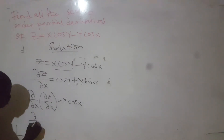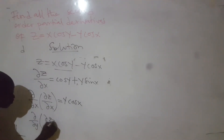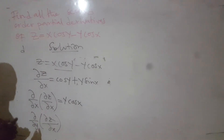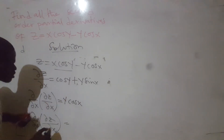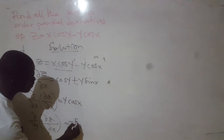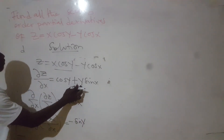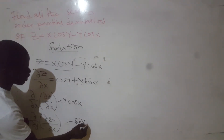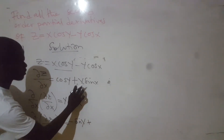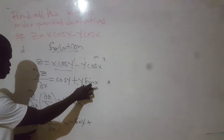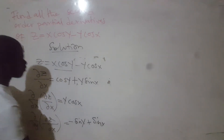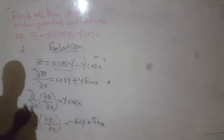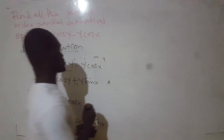Now let's go and differentiate z with respect to y. We are differentiating the previous result with respect to y. When we differentiate cos y, we get negative sin y. When we differentiate the y here, we get 1. So, plus — when we differentiate y sin x with respect to y, we get sin x. So these are the first two second-order partial derivatives.